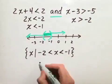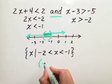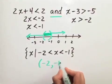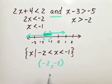And the interval notation would be the values from negative 2 to negative 1, but not including the end points.